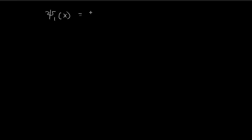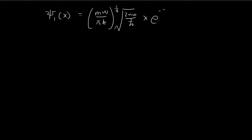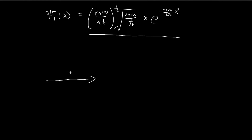Now for the second graph — the first stationary state — there is an example in the book where Griffiths finds the expression for the first stationary state. You apply the ladder operator to psi naught to obtain this expression. The first stationary state is found to have this x term multiplied by e to the power of negative kx squared.